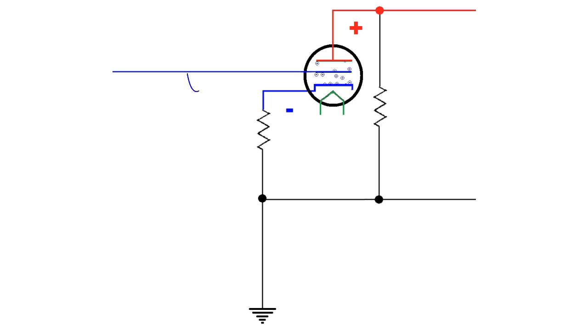Now if we pass in a signal onto the grid, that will modulate the stream of electrons flowing off the cathode in the following manner. So as the signal goes more positive, the stream of negative electrons coming off the cathode can move freely through the grid and onto the plate.